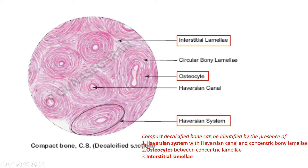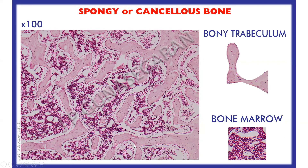This is a spongy or cancellous bone made of irregular bony trabeculae separated by marrow cavity containing bone marrow. These trabeculae are lined externally by endosteum containing osteoblasts and osteoclasts, whereas the osteocytes are embedded in the bony matrix. The structural detail can be identified very clearly in a higher magnified photomicrograph.